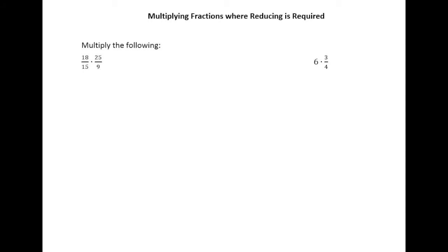We multiplied straight across, top times top, bottom times bottom, and both products that we got were already completely simplified. Here we're going to look at a couple situations where that's not the case.